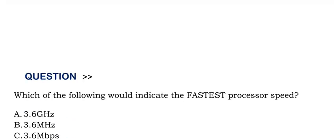Next question: Which of the following would indicate the fastest processor speed? Option A: 3.6 GHz. Option B: 3.6 MHz. Option C: 3.6 MB per second. Option D: 3.6 GB per second.